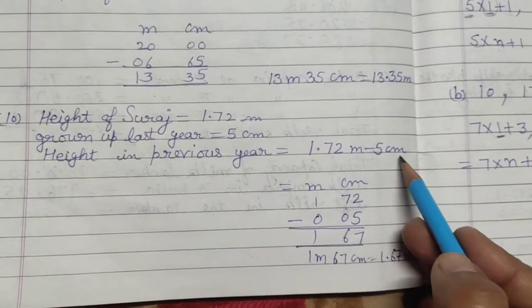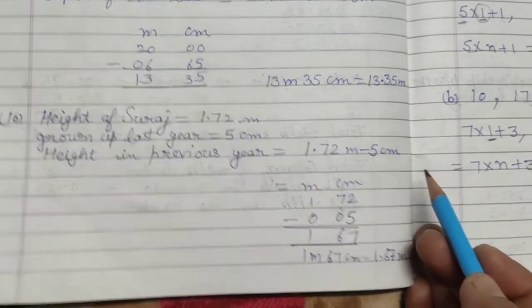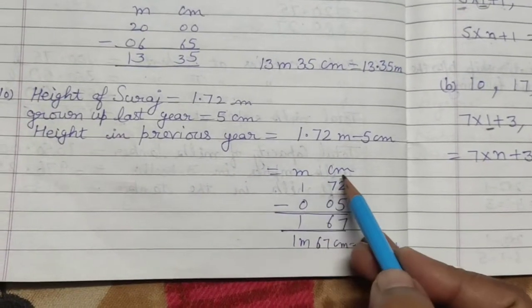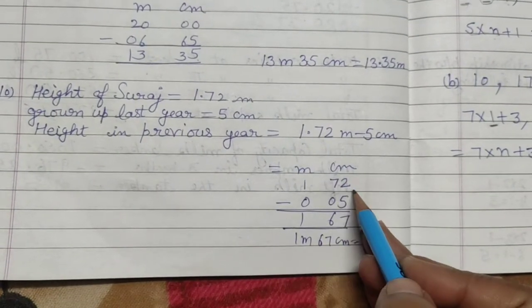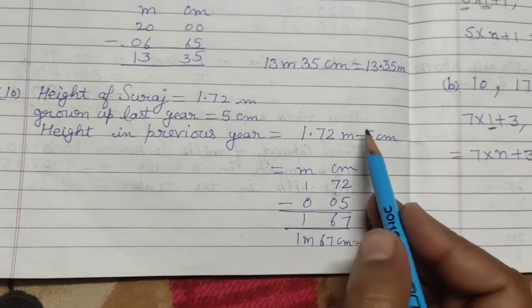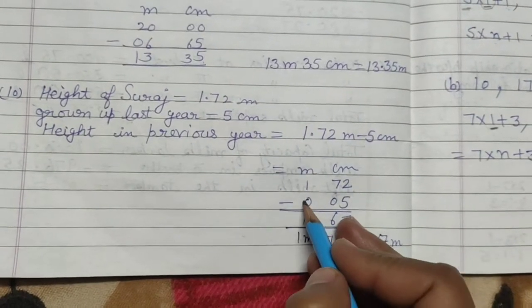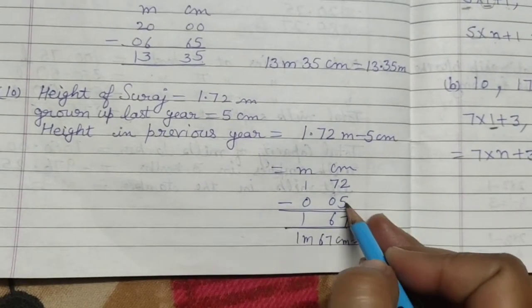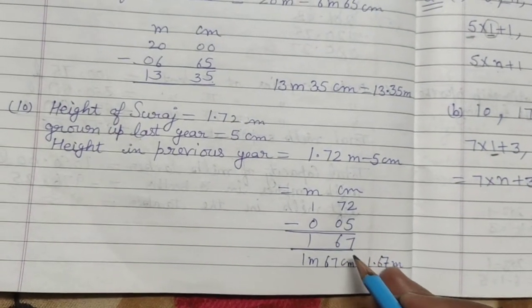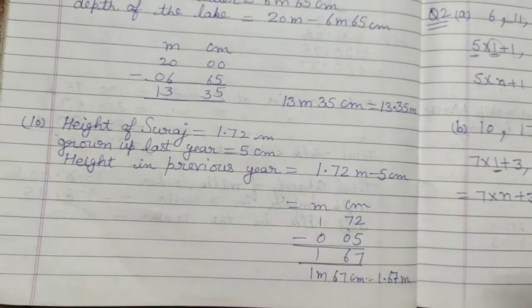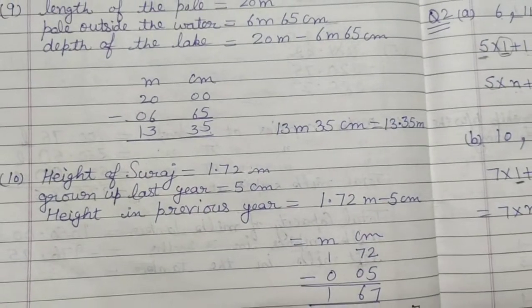And here first we will write meter, centimeter. So 1 meter 72, it represents. Okay, and here if you have no meter, then here we will write 0, 5, and here we will minus. So we will write all of this. Okay students, bye, take care.